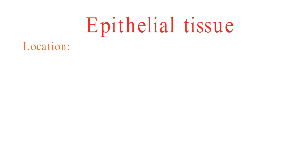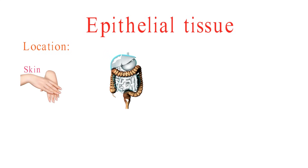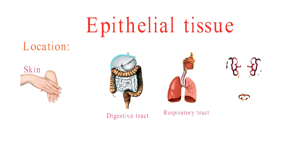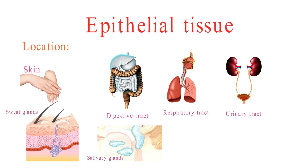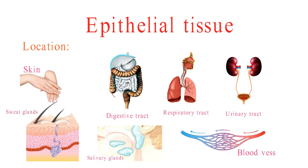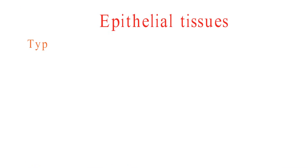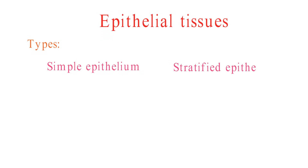Epithelial tissue is found all over the body, including the skin, lining of the digestive tract, respiratory tract, and urinary tract, glands such as the sweat glands and salivary glands, and lining of the blood vessels and other organs. There are two main types of epithelial tissue: simple epithelium and stratified epithelium.